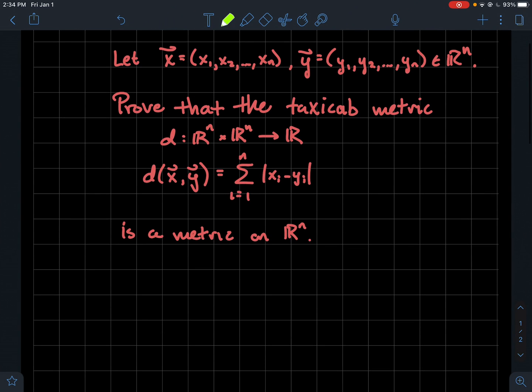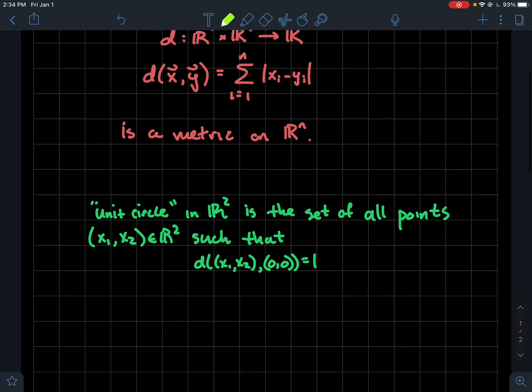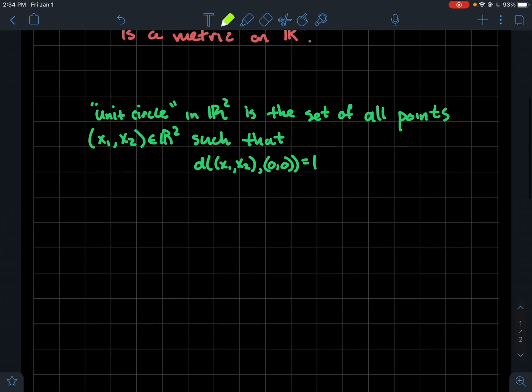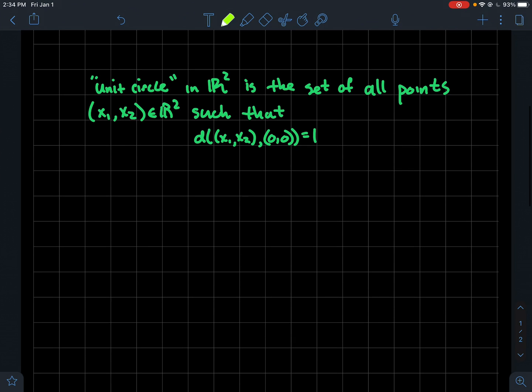Just to get us comfortable with what the taxicab metric looks like, let's do an example in R^2. So let's think about what would the unit circle be in R^2 if the taxicab metric is how I choose to define the distance between two points. For R^2, I'm going to use coordinates x1 and x2, instead of x and y. Think of x2 as y if you like. So the unit circle, remember, that's going to be all the points whose distance from the origin is 1.